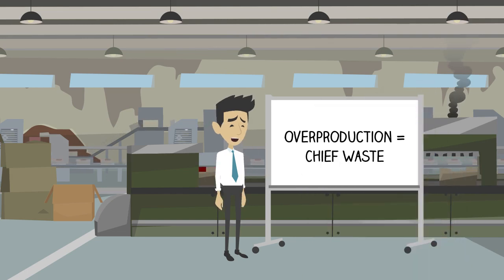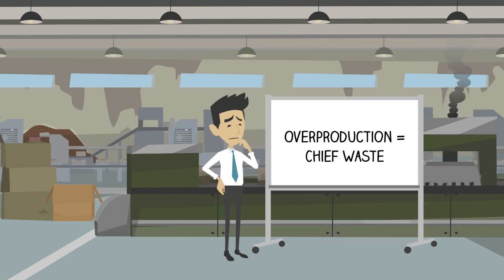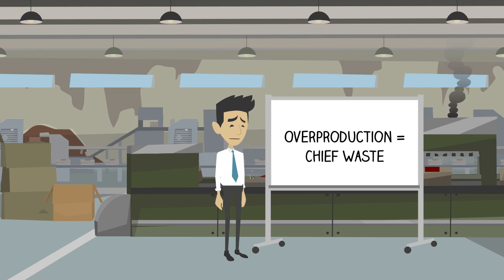Overproduction is making or purchasing more product than what is required by the next downstream customer. Taichi Ono considered overproduction to be the chief waste because it amplifies all of the other wastes. As you make more of a product than what is required by the customer, the next job which might be needed is waiting. The overproduced product must be transported and stored in inventory until it sells.